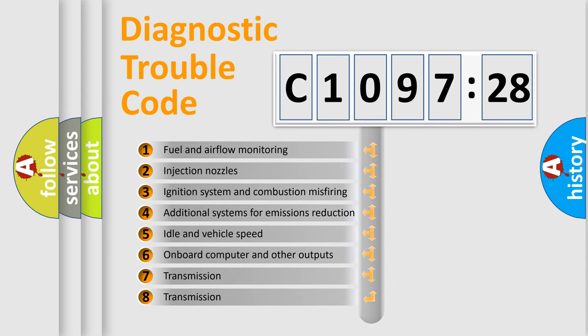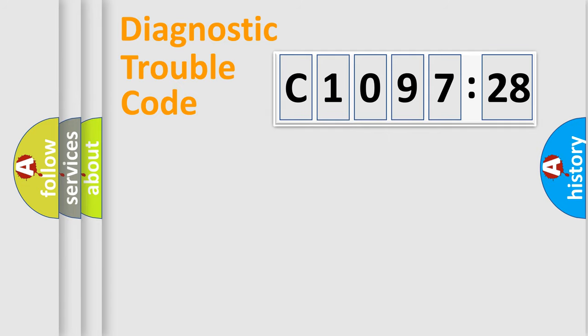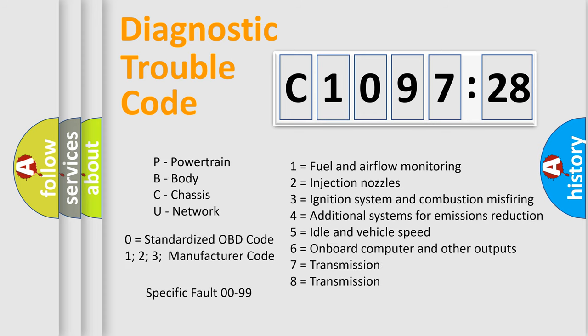The third character specifies a subset of errors. The distribution shown is valid only for the standardized DTC code. Only the last two characters define the specific fault of the group. The add-on to the error code serves to specify the status in more detail, for example, a short to the ground. Let's not forget that such a division is valid only if the second character code is expressed by the number zero.